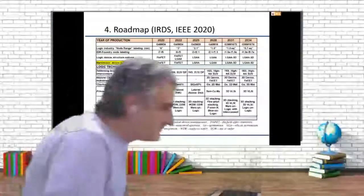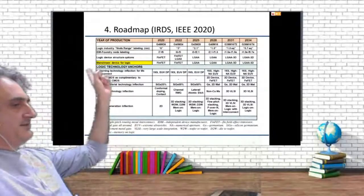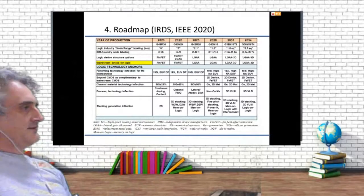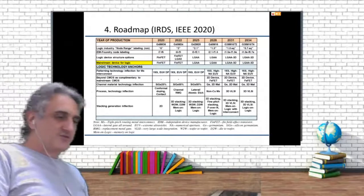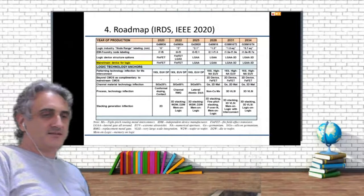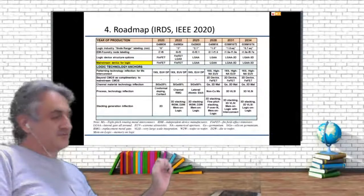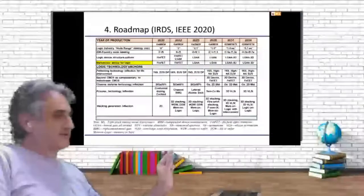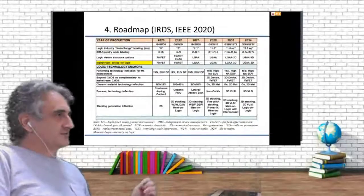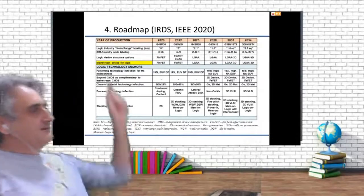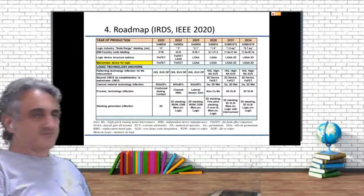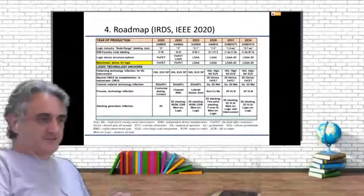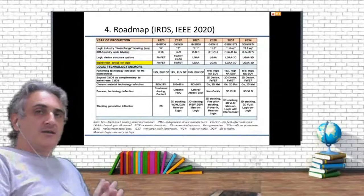The most important thing here is the size of the transistors — the smaller the transistors, the more you can put in the same system. This is why you are trying to reduce the size of your transistors. Now the nominal size is more or less 5 nanometers.